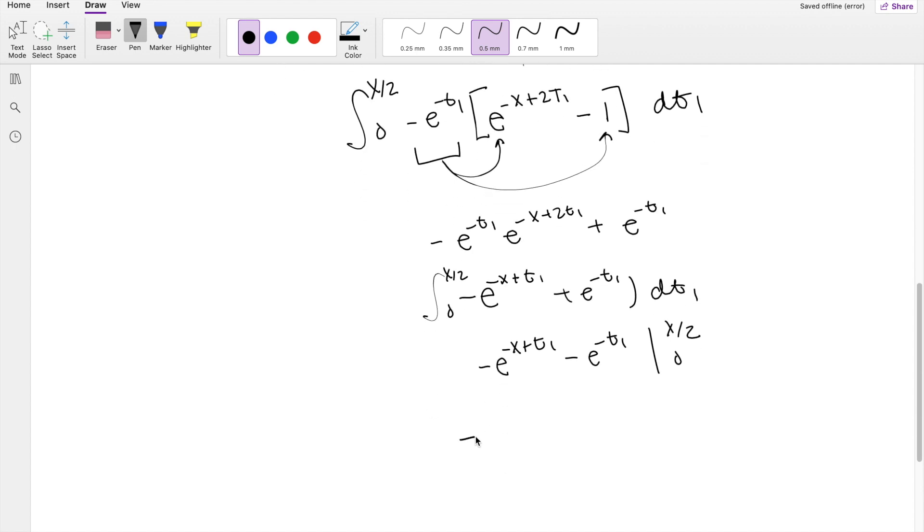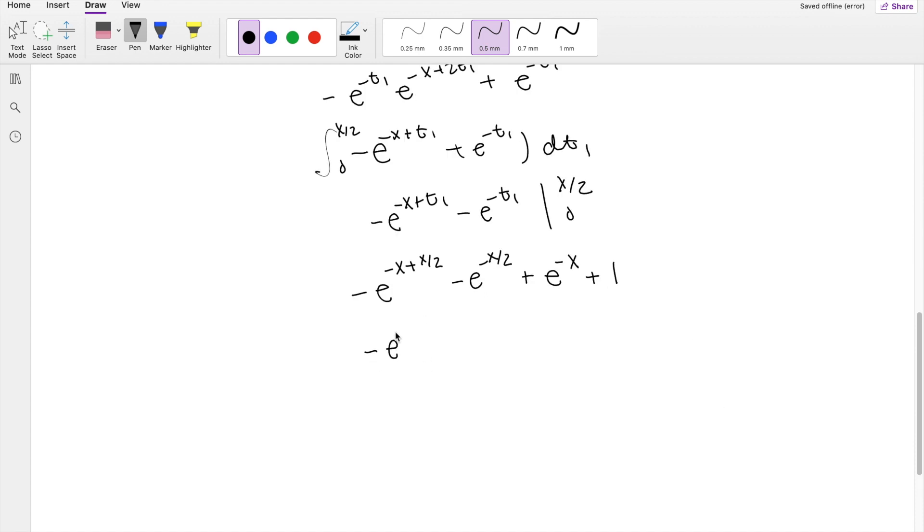The upper limit here, when you plug it in for dt1, you get negative x plus x over 2 minus e to the negative x over 2. Minus, when you plug in 0 here for t1, you get negative, negative, so that's positive e to the negative x. Negative negative makes a positive here, and e to the 0 is just 1. So this is equal to negative e to the negative x over 2 minus e to the negative x over 2 plus e to the negative x. So I can put these two numbers together. You get negative 2e to the negative x over 2 plus e to the negative x plus 1.